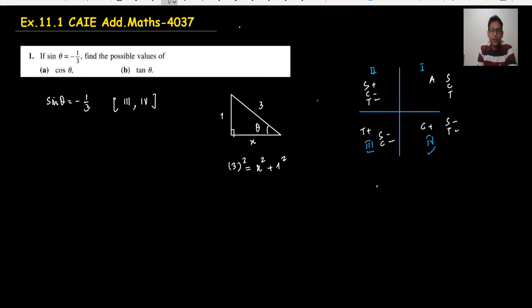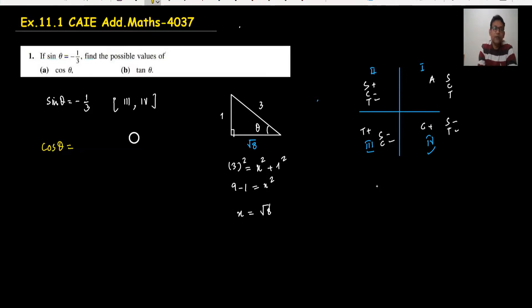So 3 squared is 9 and 1 squared is 1, coming 9 minus 1 equals x squared. So x is coming under root 8. I can write here this is under root 8. Now we just have all the values. What we have to do is find cos theta — cos theta is coming under root 8 upon 3 from this triangle.